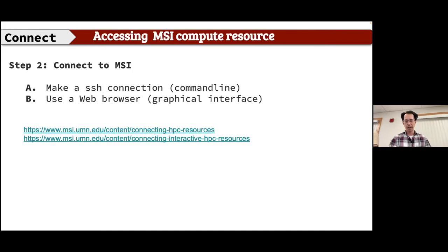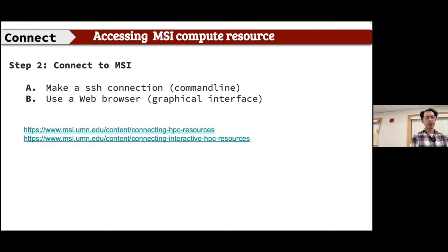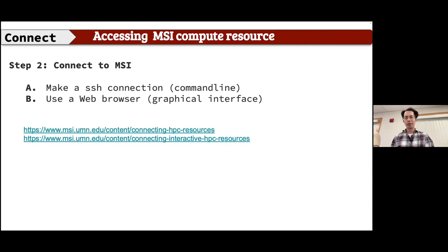After the VPN connection, you can open a terminal and use an SSH connection from the command line. There's also a web browser option, but for submitting jobs we should use a terminal since we'll be submitting jobs from the command line. I personally prefer using the SSH connection from a terminal window. There are two links below showing how to connect to HPC interactively.